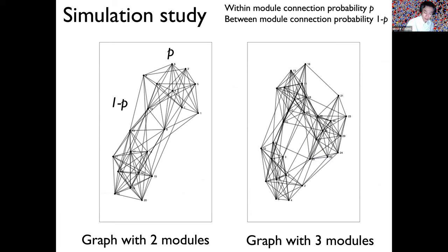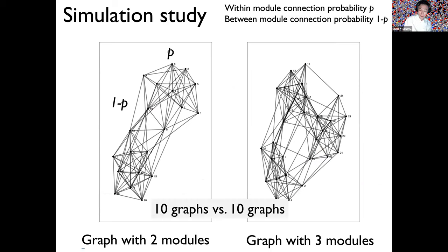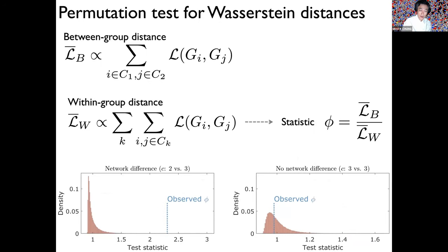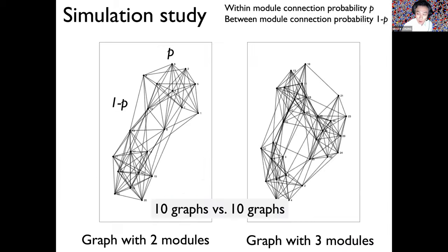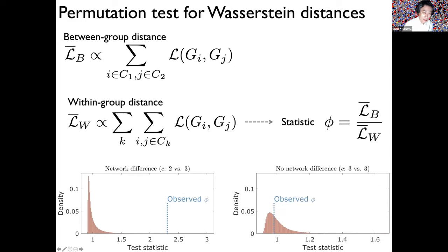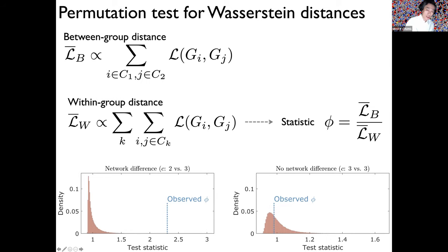We did a simulation study: graphs with two modules and graphs with three modules. We generate 10 graphs and form a distance — squared Wasserstein distance — between and within groups. By the way, these distances are correlated; if you add them, it's constant. You can prove this mathematically — it's obvious with Euclidean distance but not so obvious with Wasserstein distance on graph filtration. If you prove it, that will give you a paper. We perform inference based on a permutation test.